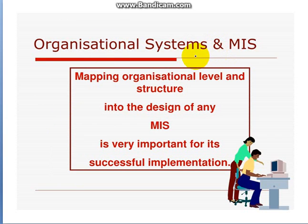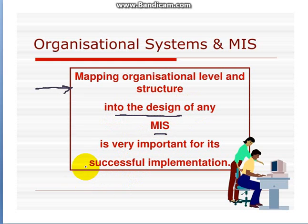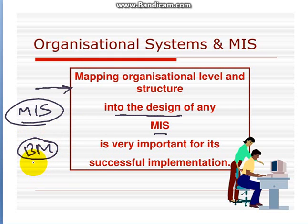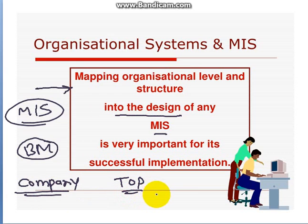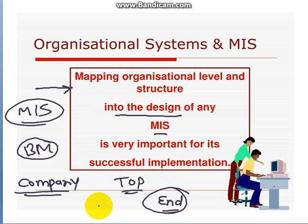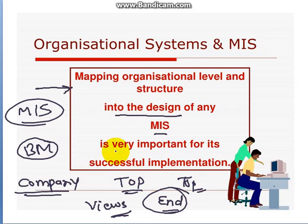As far as organizational systems and MIS are concerned, mapping organizational levels and structure into the design of any MIS is key to successful implementation. If any MIS is to be designed, the business models of that company must be studied — their hierarchy and management levels. What end users would be able to see, what kind of data they access — that is very important to understand. Accordingly, appropriate views should be provided, and the person at the low level should not be able to see top management results. The mapping of organizational level and structure must be designed and implemented successfully by MIS.